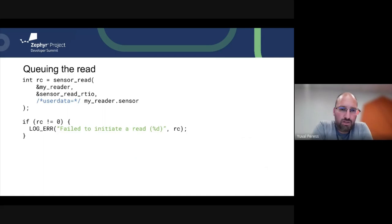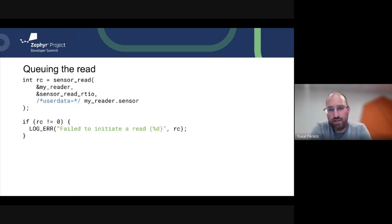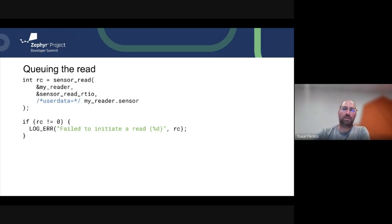To queue a read, there's a simple sensor API function called sensor_read. You pass it a pointer to your reader, a pointer to your RTIO context, and any optional user data — this could be null. In this case we provide the device pointer, which is the sensor member of the reader.